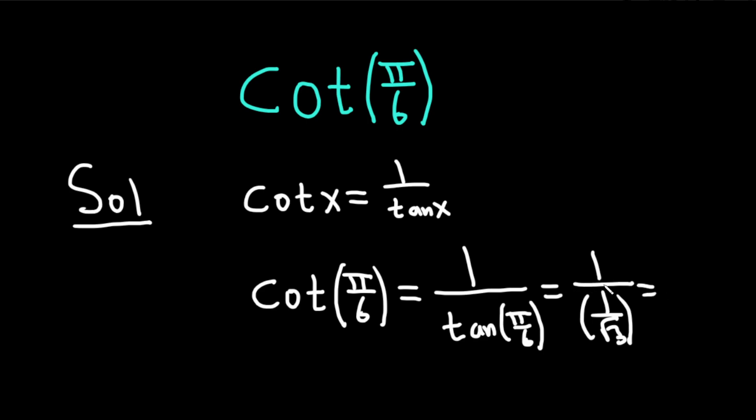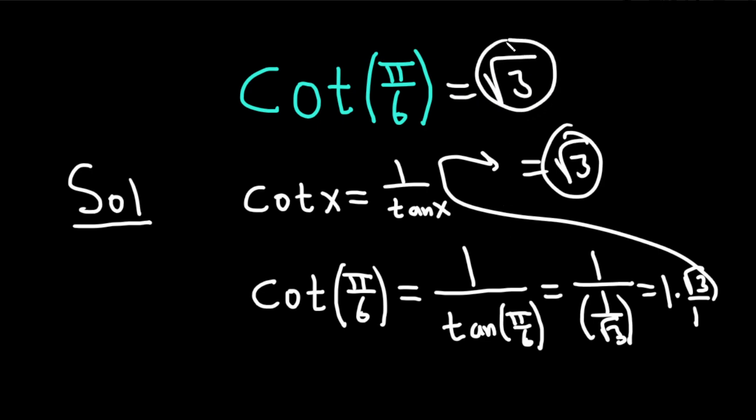Which is - whenever you divide, you multiply by the reciprocal. So it's 1 times root 3 over 1, which equals the square root of 3. And that would be the answer. So the cotangent of pi over 6 is just equal to the square root of 3.